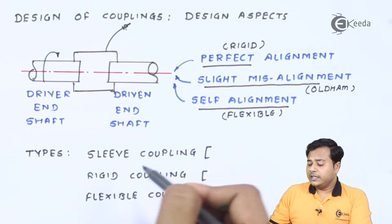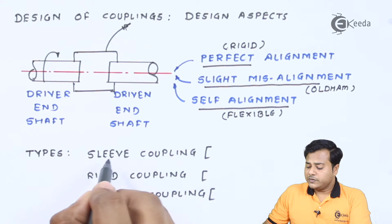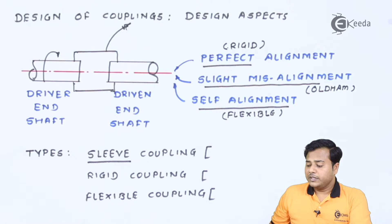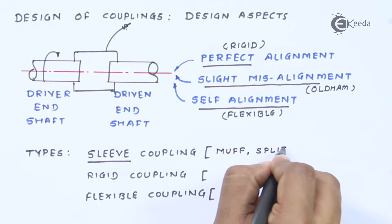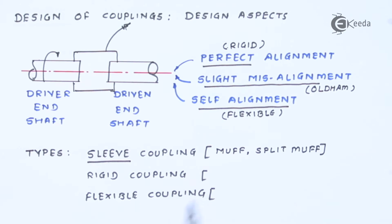Now, like we said, there are three types of couplings. This one is the sleeve coupling, which is nothing but your Oldham kind of coupling or some muff type of coupling. So these are the two main types which we are going to look at. There comes the rigid coupling and there comes the flexible coupling.